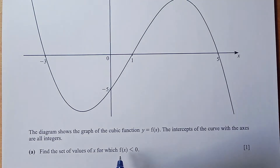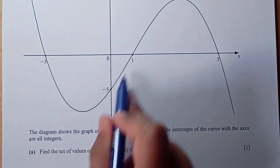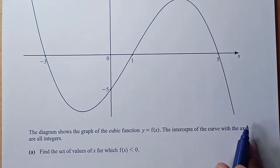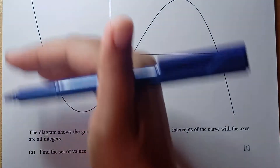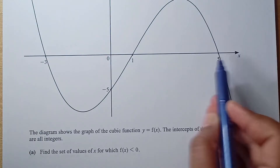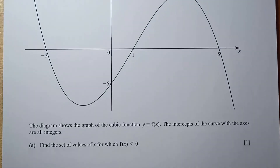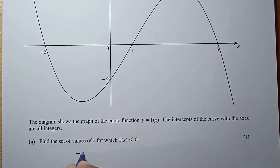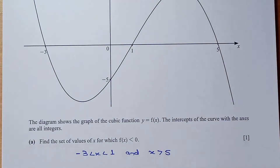We need to find the set of values of x when the function is negative. As you can see in this curve, the function is negative. So we can say when the x values are between minus 3 and 1, the function is less than 0, and then when x values are more than 5, it is also less than 0. So the set of values: minus 3 is less than x is less than 1, and x is greater than 5.